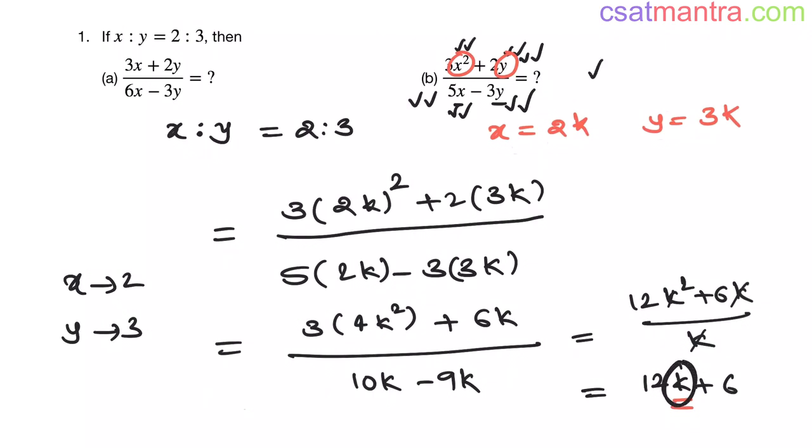Because here k is there, it did not get cancelled. We cannot find the value of this expression by substituting x as 2 and y as 3. x equals 2k and y equals 3k is the only meaning. We are taking x as 2, y as 3 only when k, k², k terms are getting cancelled in numerator and denominator. I hope this is clear.